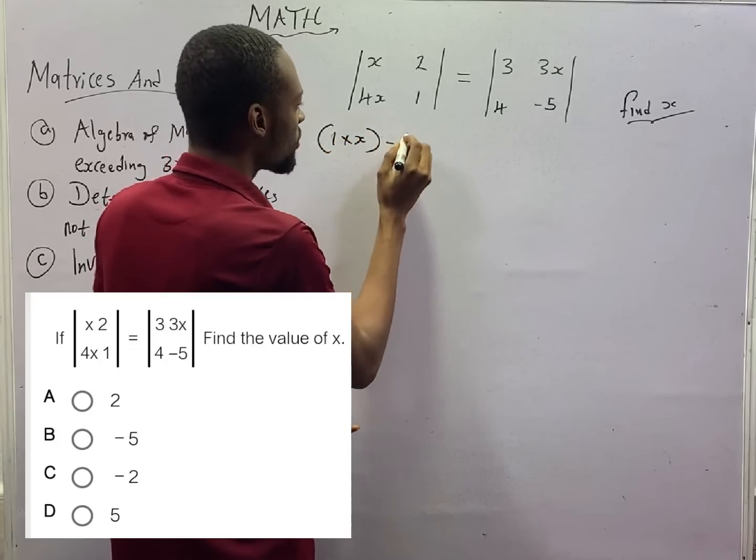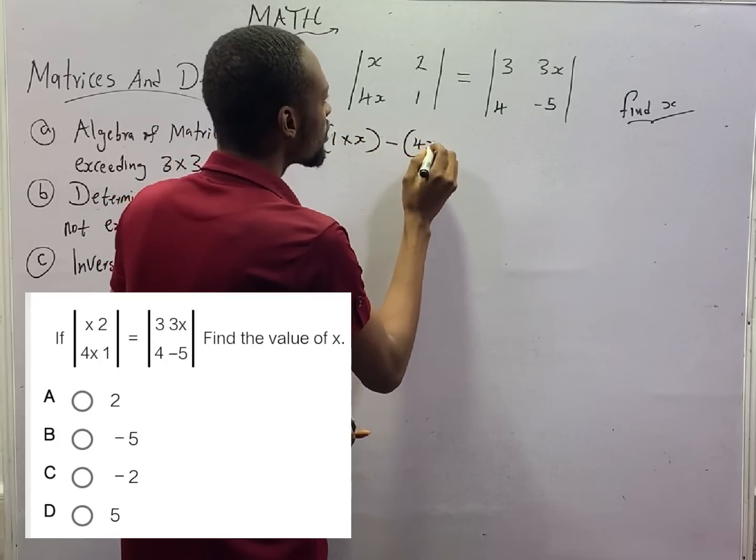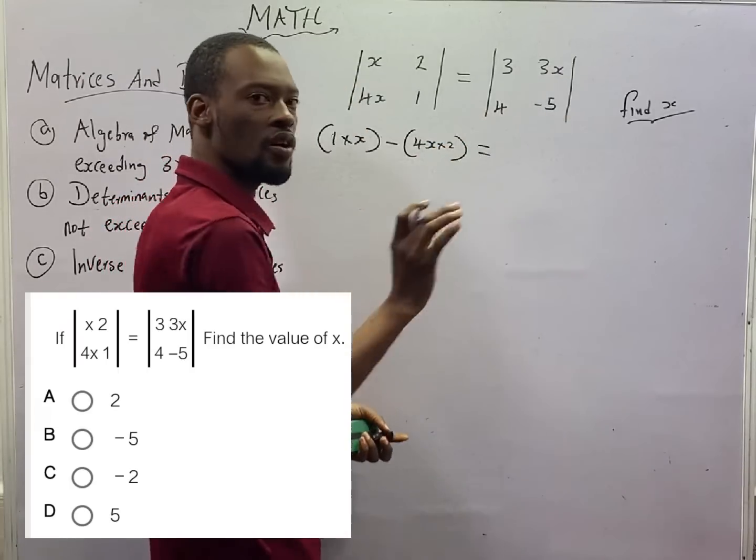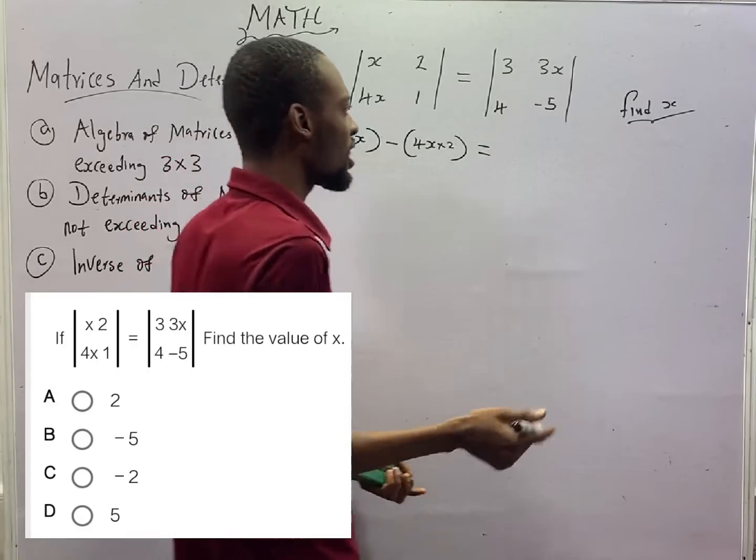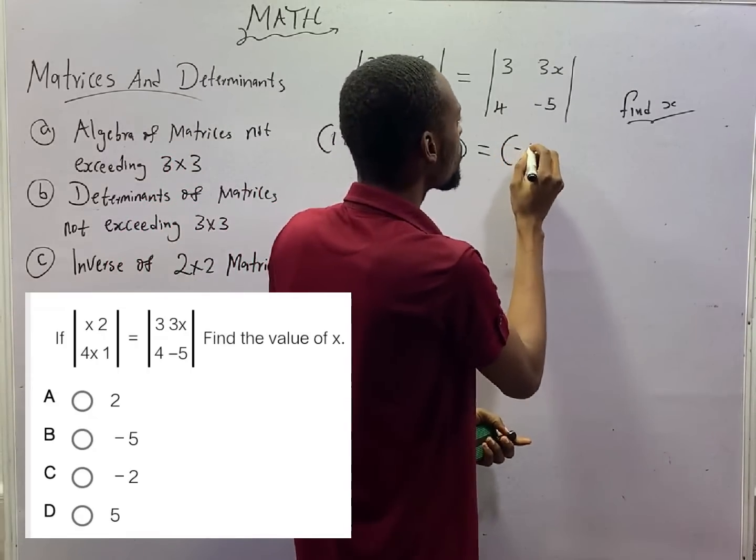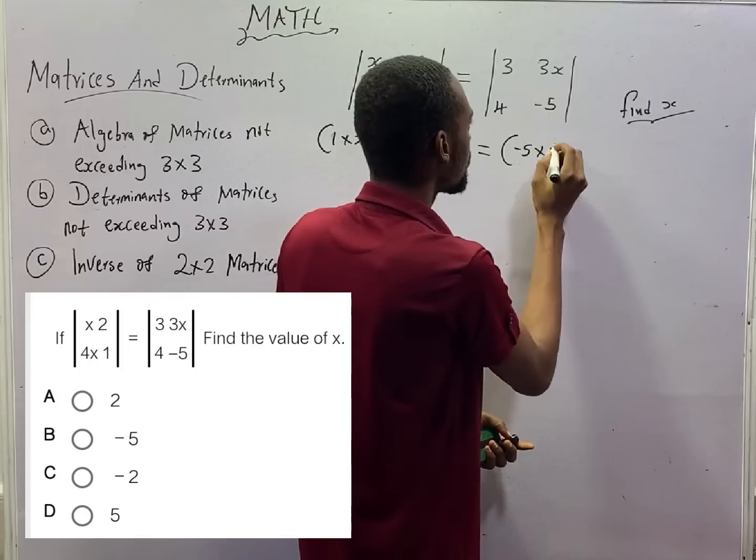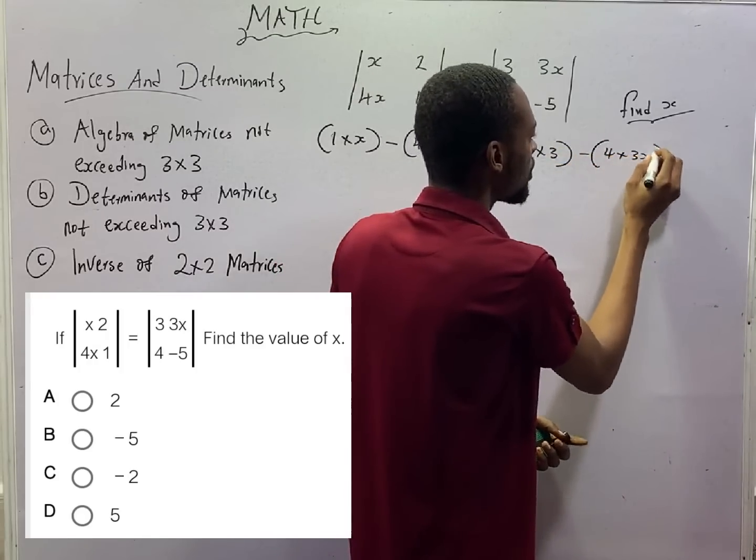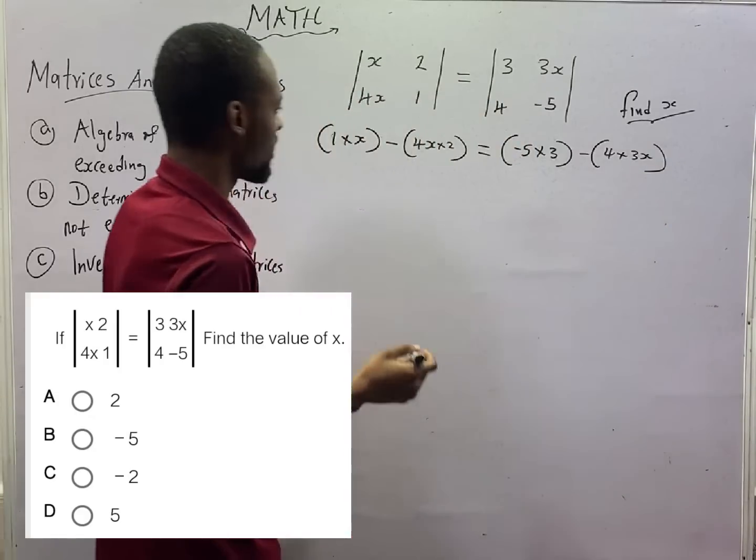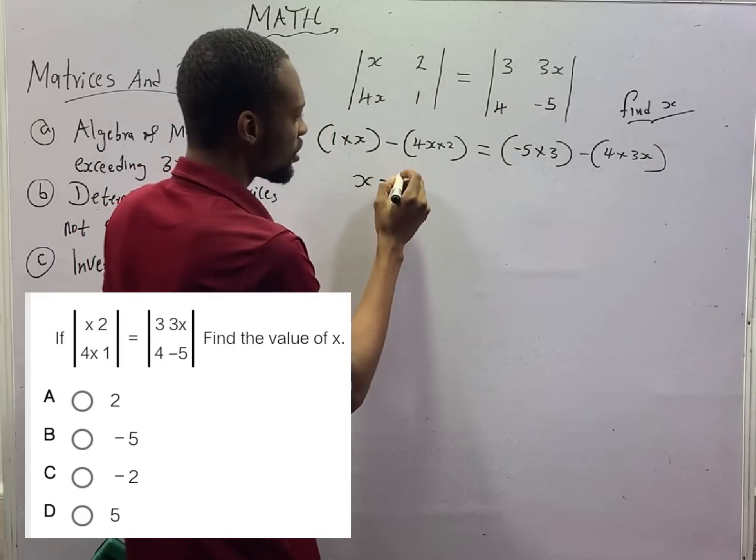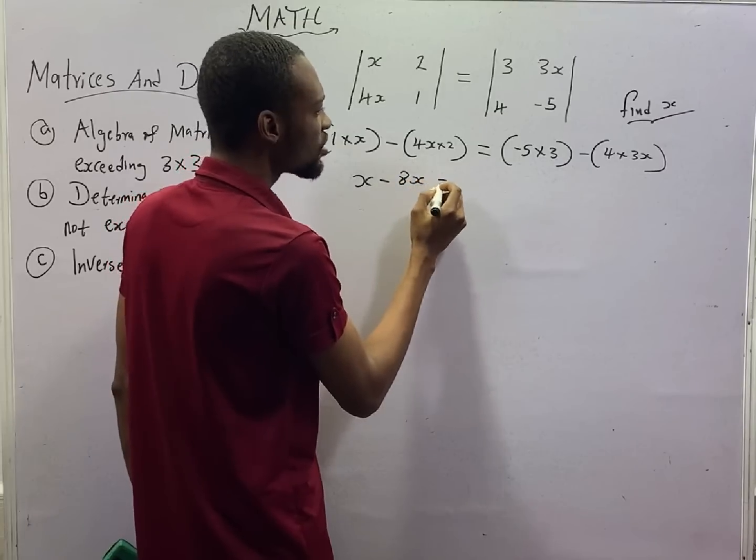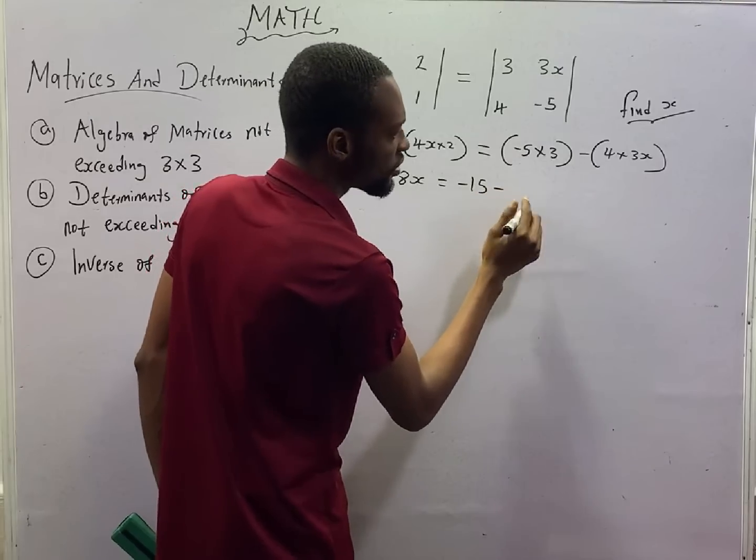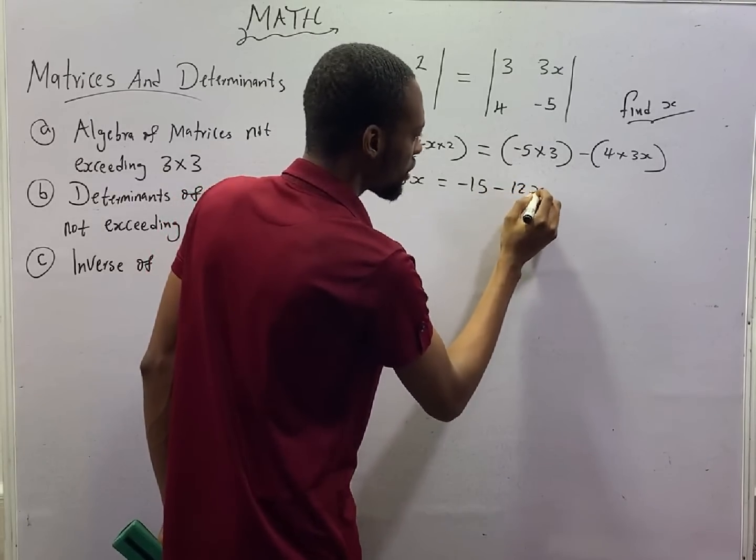So, this will also be equal to the determinant of the second matrix and that will be minus 5 times 3 minus 4 times 3S. From here, this is S minus 8S is equal to minus 15 minus 12S.